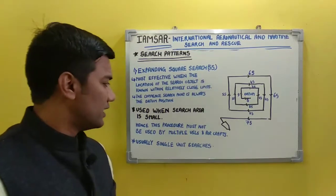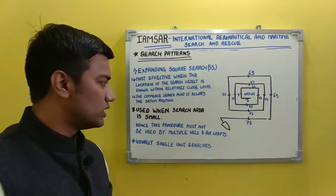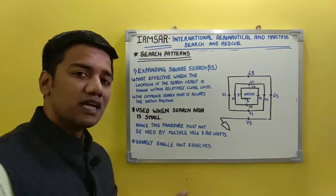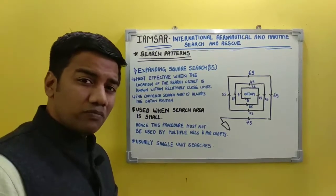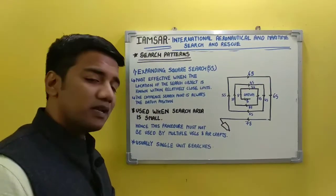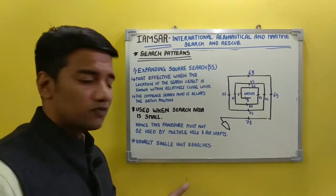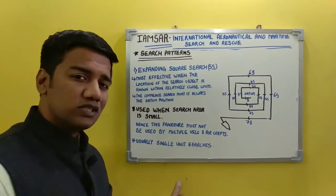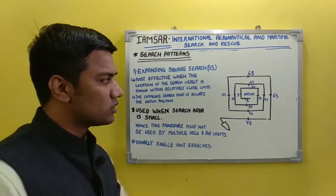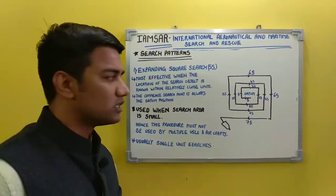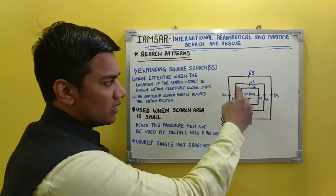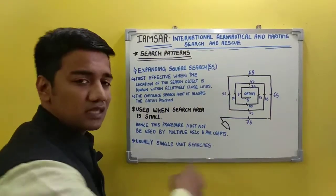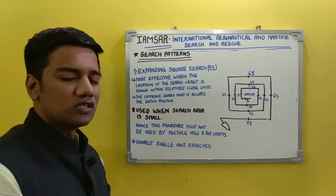This pattern is used when the search area is small, and hence it is recommended that multiple aircraft or multiple vessels need not be used. This search is usually represented by a single unit. The commencement of the search point is the datum, and the pattern expands outward — 1S, 2S, 3S, 4S, 5S, 6S — and so on. This is how your expanding square search is done.